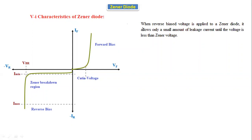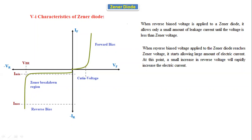Now let's discuss the benefits of the Zener diode. When reverse bias voltage is applied, it allows only a small leakage current until the voltage is less than the Zener voltage. After reaching the reverse breakdown voltage, the current increases drastically — the Zener diode starts allowing a large amount of electric current when it reaches the Zener voltage.